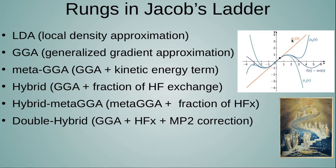The first rung is the Local Density Approximation (LDA), which says the energy is a function of the value of the density at each point in space — the crudest approximation possible. Then you have the Generalized Gradient Approximation (GGA), which considers the energy as a functional of the density and its derivative. Then there are meta-GGA functionals, which also contain a kinetic energy term as a cheaper way to account for something similar to the second derivative of the density.